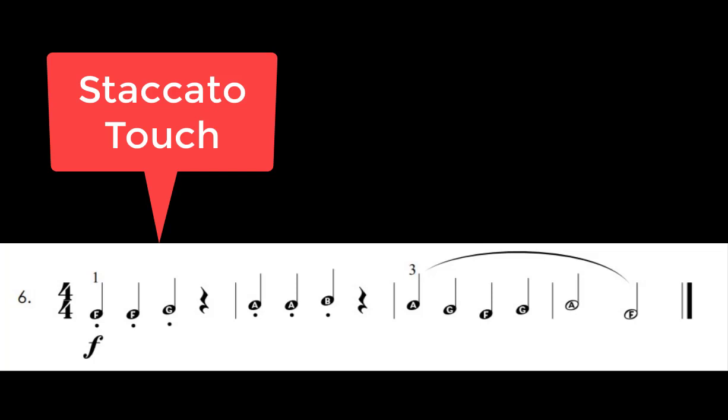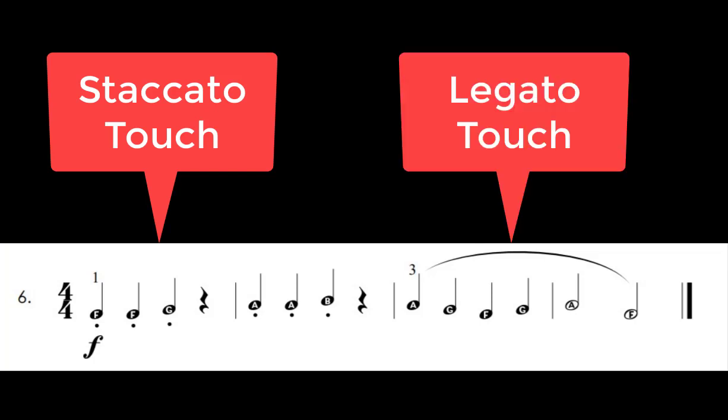This piece has part of the notes staccato and part of the pieces legato. So I got to change my articulation. So the word touch and articulation are kind of the same word. We say, what touch is it? The answer could be staccato or legato. What articulation is it? The answer could be staccato or legato. So I'm going to use staccato touch for the first two measures and a legato touch and you should be able to hear that real clearly.